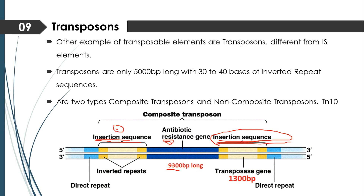This is the difference between IS elements — insertion sequences — and composite transposons. Composite transposons contain insertion sequences, while insertion sequences themselves are short transposable elements. The insertion sequences contain the region responsible for encoding the transposase enzyme.